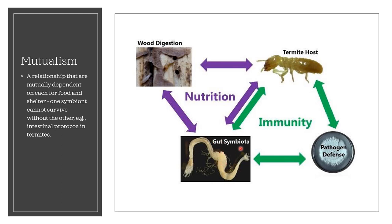These organisms reside in the hindgut of the termite and secrete an enzyme called cellulase. These bacteria and protozoans help the termite fulfill its nutritional requirement and also make them immune to pathogen attack. In return, the termite provides its gut symbiont with protection and food such as cellulose. These protozoans would die outside the termite, and the termite also cannot survive without them. As both partners are benefited, this is an example of mutualism.